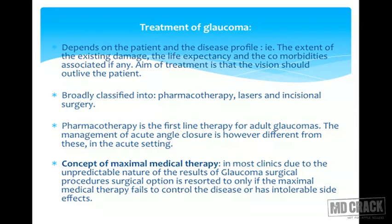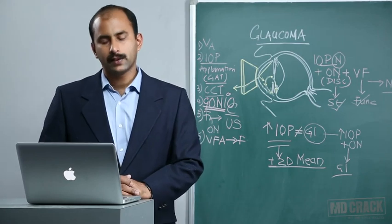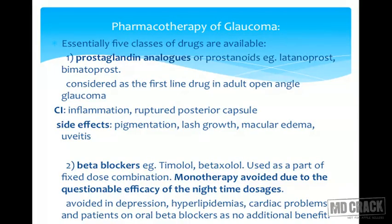Broadly, treatment of glaucoma is classified into pharmacotherapy, lasers, and incisional surgery. Pharmacotherapy is the most practiced treatment due to uncertainty of surgical outcomes and the wide variety of effective medications available. It is the first line in adult glaucomas. There is a concept of maximum medical therapy — exhausting all medications before offering surgery, due to inadequate control or intolerable side effects. The management of acute angle closure is slightly different. Pharmacotherapy of glaucoma involves predominantly five classes of drugs.